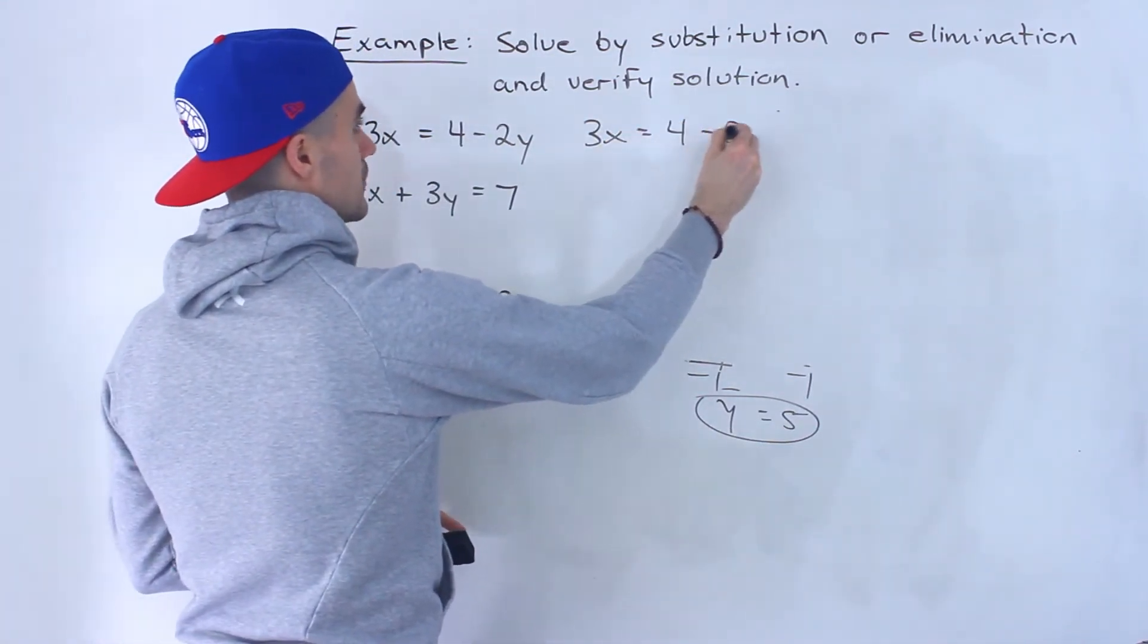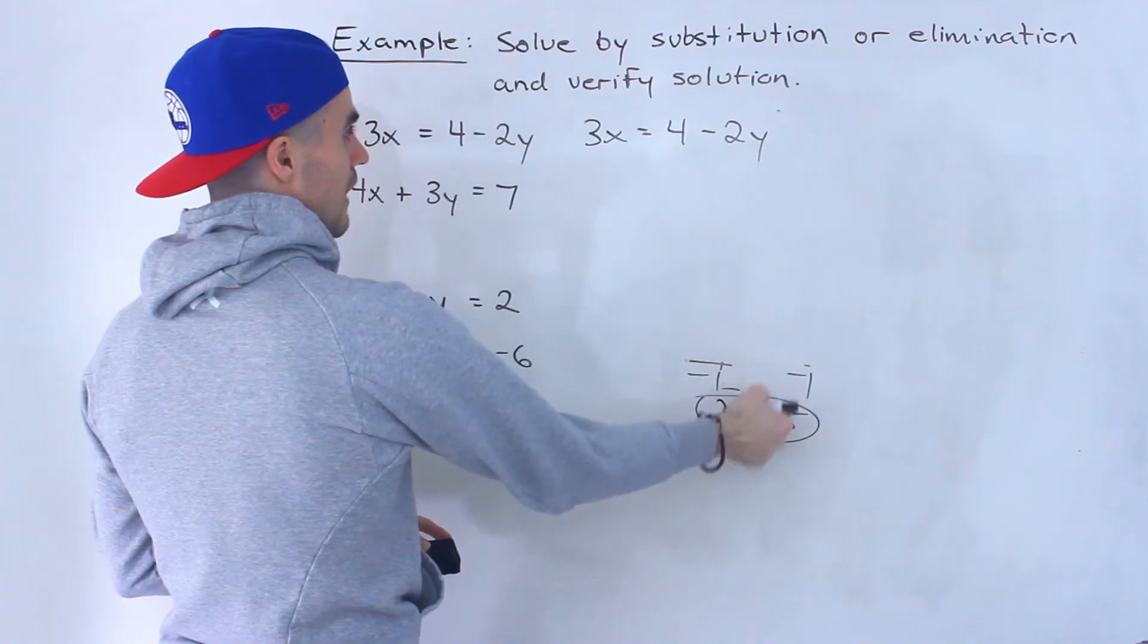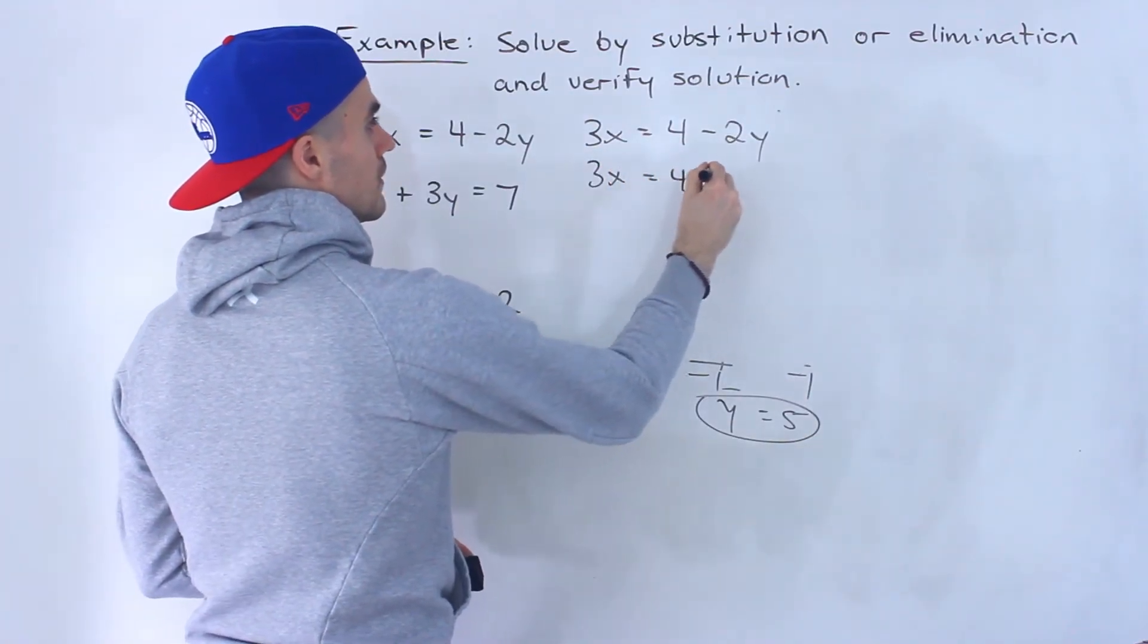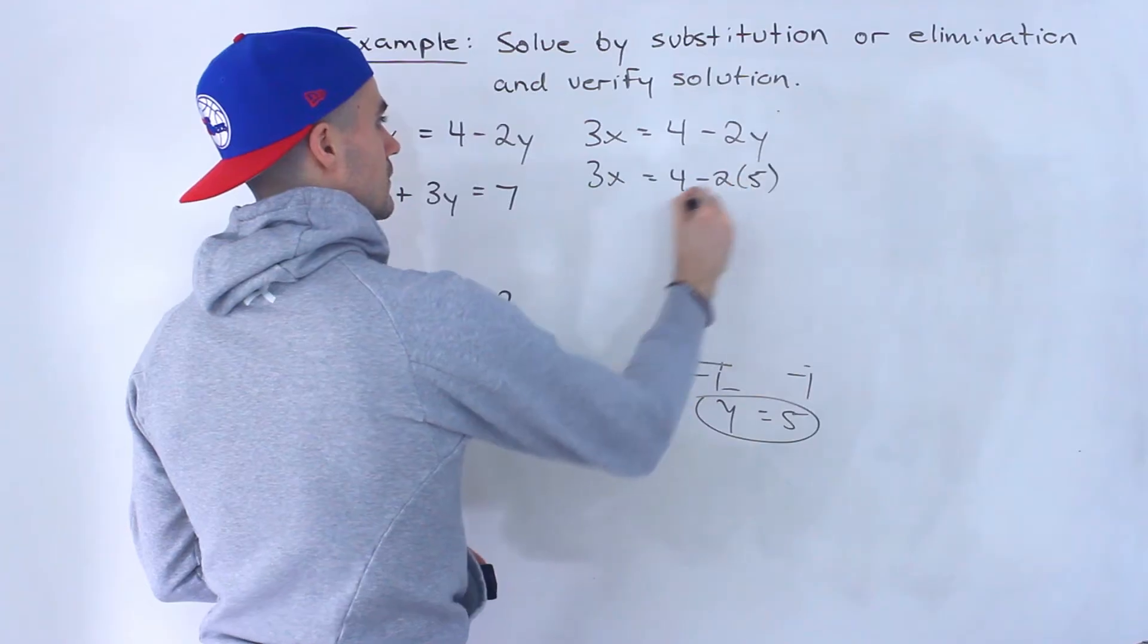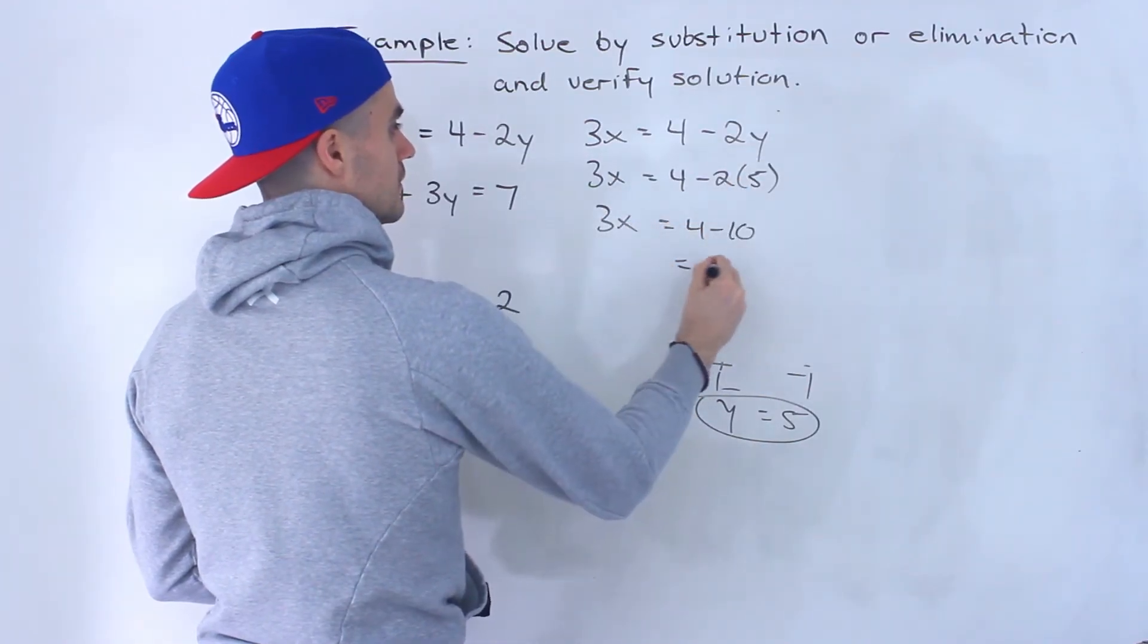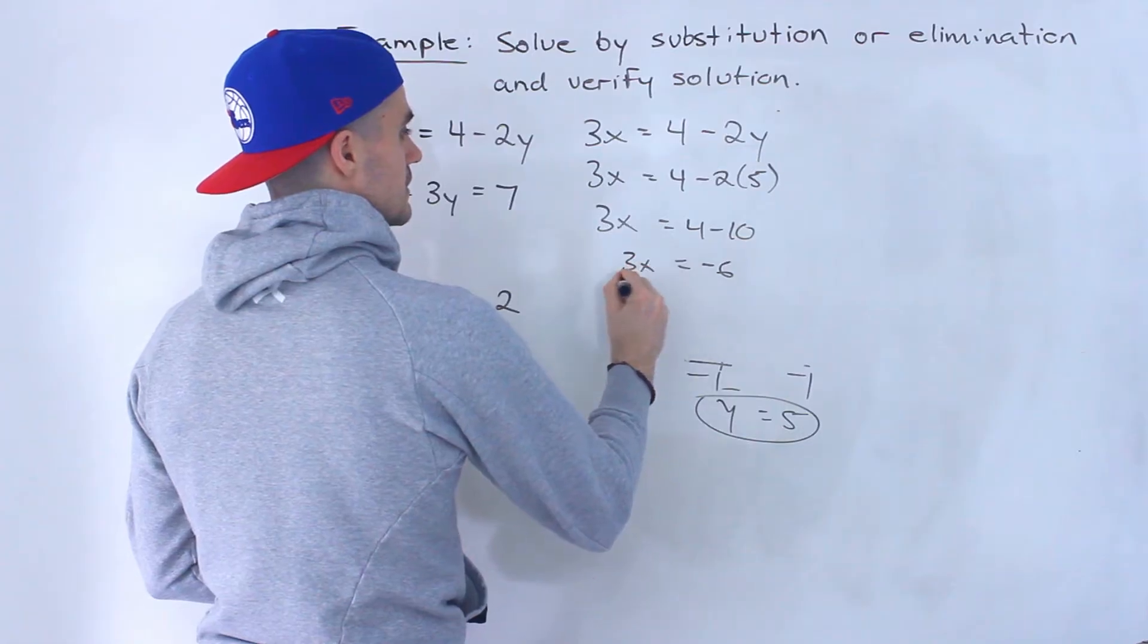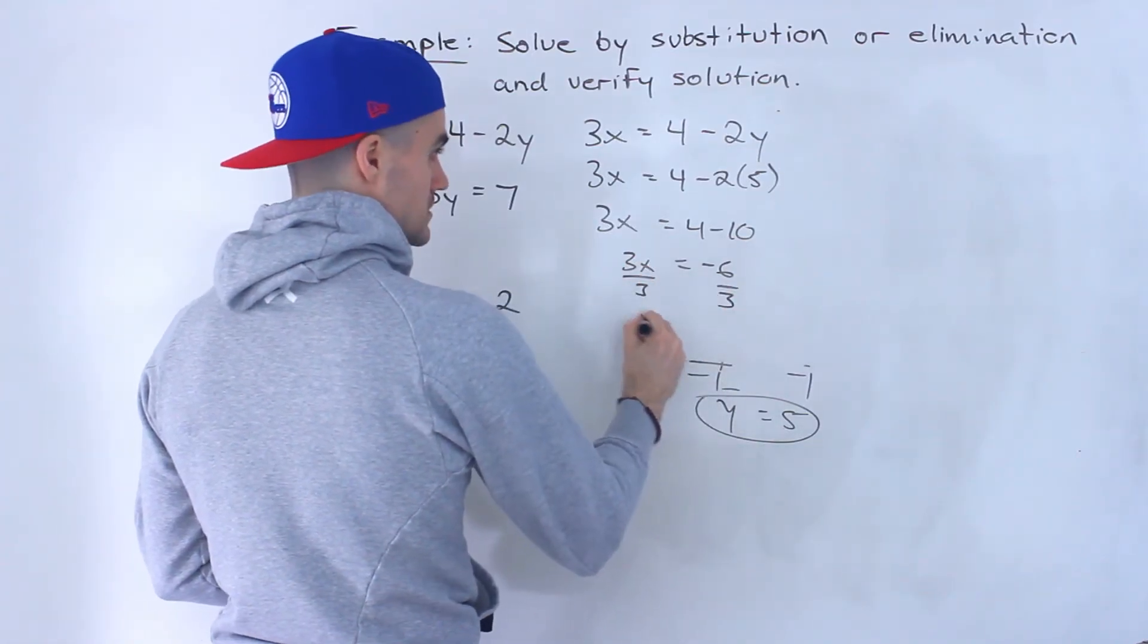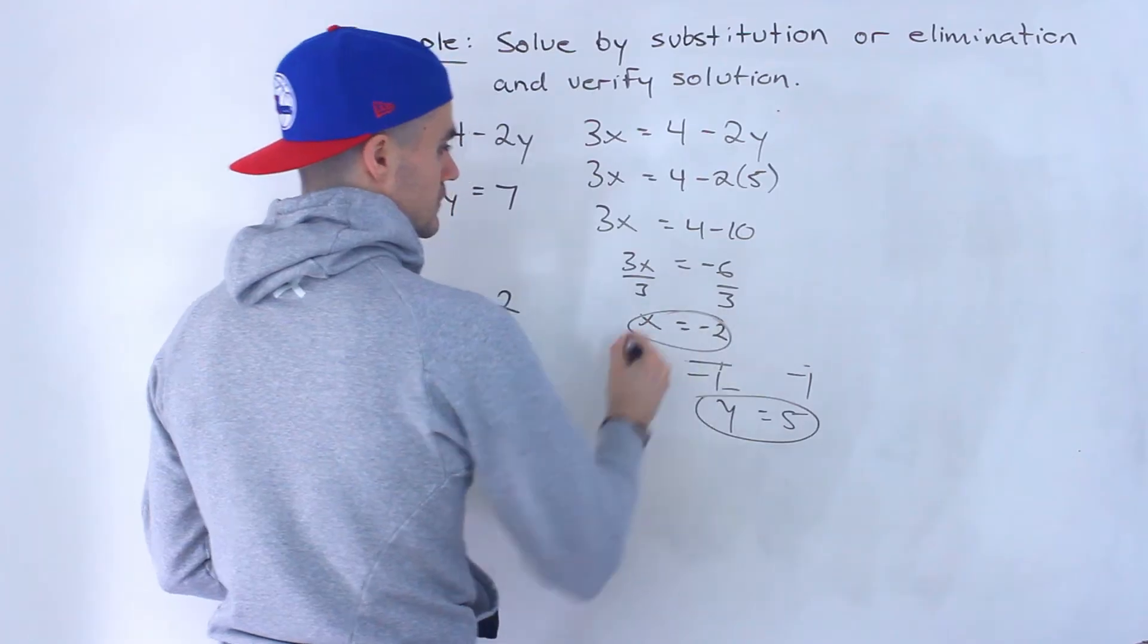So we would plug in negative 5 for y. So notice we'd have 3x equals 4 minus 10, negative 6. Divide both sides by 3 so x would be negative 2.